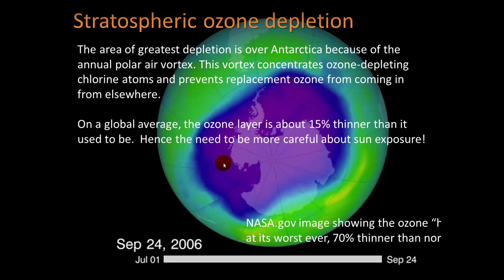Here's a satellite image of the ozone layer at its worst, at the end of winter in the Southern Hemisphere — opposite from the northern hemisphere — in 2006. The hole is usually over Antarctica because of an annular polar air vortex, which concentrates ozone-depleting chlorine atoms and prevents replacement ozone from coming in. On a global average, the ozone layer is about 15% thinner than it used to be. This NASA image shows an ozone layer that's 70% thinner than normal.